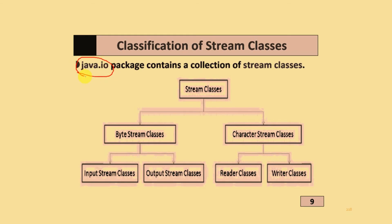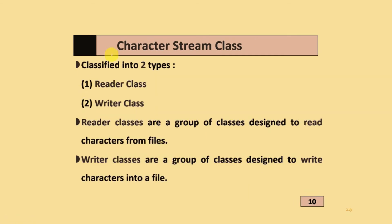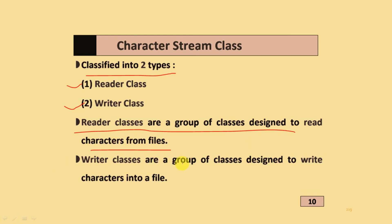The java.io package contains a collection of stream classes divided into two parts: byte stream classes and character stream classes. Byte stream classes are further divided into input stream classes and output stream classes. Character stream classes are divided into the Reader class and the Writer class. Reader classes are a group of classes designed to read characters from a file, and Writer classes are a group of classes designed to write characters into a file.